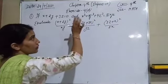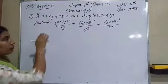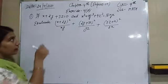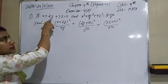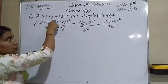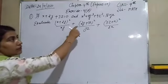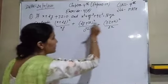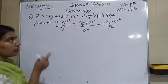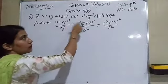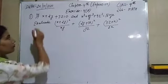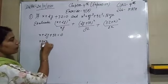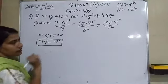We also have x³ + 4y³ + 9z³ = 18xyz. Now, firstly we need to find the values of x + 2y, 2y + 3z, and 3z + x. From x + 2y + 3z = 0, we get x + 2y = −3z. Here 3z is positive on the left side, so it becomes −3z on the right side.